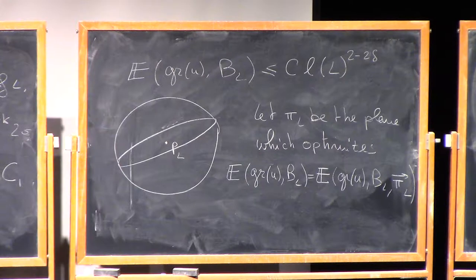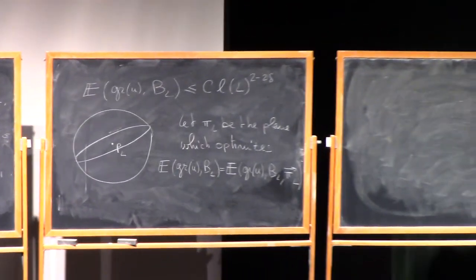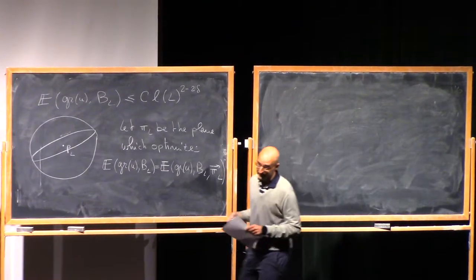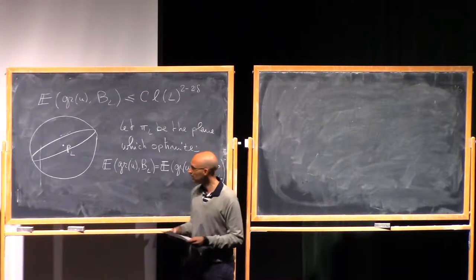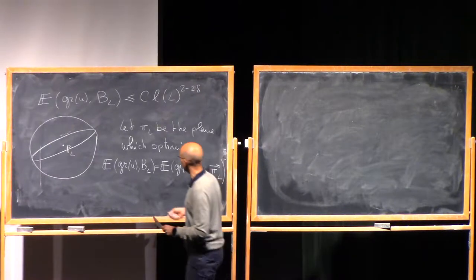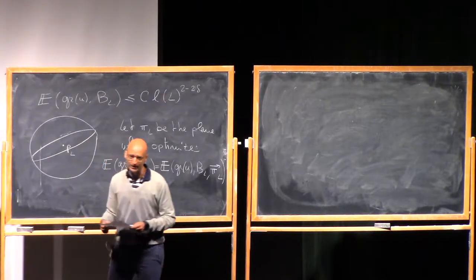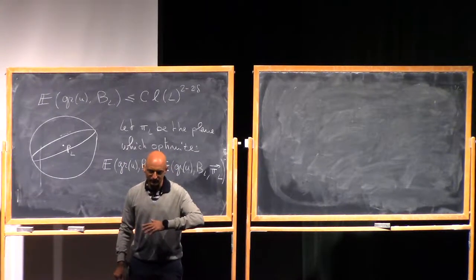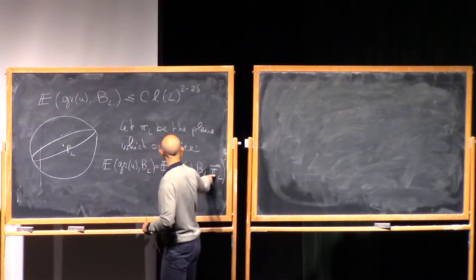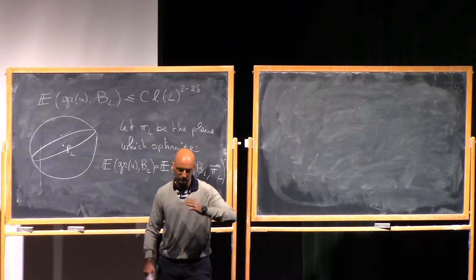Now there's one thing you can conclude from either the proposition that Du is C^{0,α}, or that you can conclude directly from De Giorgi's excess decay by summing a certain estimate done in the lecture. One thing you can certainly believe is that since I proved that the derivative of u is C^{0,α}, and since this optimal plane is essentially the average of Du over a ball of comparable size, the plane π_L is tilted at most E^{1/2} compared to the horizontal plane.